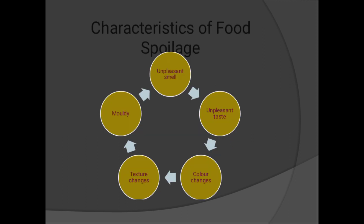Characteristics of food spoilage include: unpleasant smell, unpleasant taste, color change, texture changes, and mold growth.